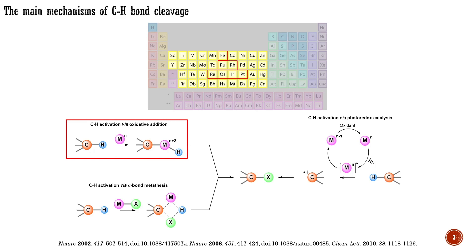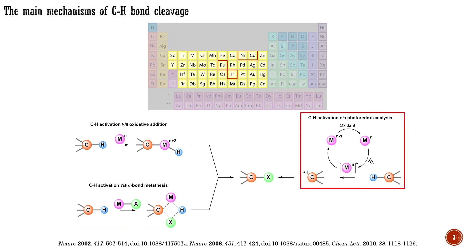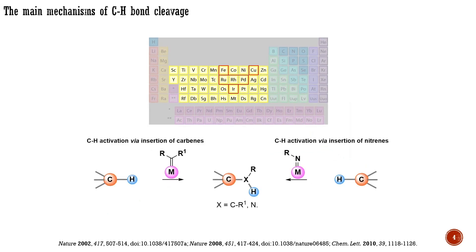The first mechanism is based on the oxidative addition of the metal to the CH bond. This type of CH activation is common for late transition metals in their low oxidation state. The second mechanism of CH activation is based on sigma bond metathesis, common for early transition metals. The next mechanism shares some similarities with enzymatic CH activations occurring in nature and is based on photoredox catalysis. In this case, the catalyst being activated by light abstracts electrons from the substrate or donates electrons to the substrate, generating radicals, cations, or other reactive intermediates that further undergo coupling reactions. The main catalysts in this case are based on iridium and ruthenium. Moreover, transition metals are known to greatly facilitate the selective CH insertions of carbenes and nitrenes. This chemistry works well with late transition metals, including iron, rhodium, and ruthenium.